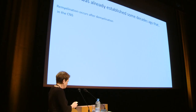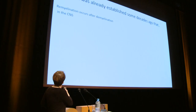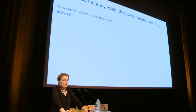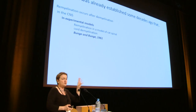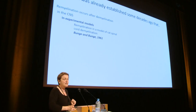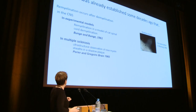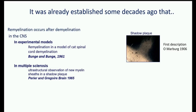Decades ago, it was established that remyelination occurs after demyelination in the CNS, first shown in experimental models — attributed to Robert and Marie Bunge in 1961 in a spinal cord demyelination model in cats. Then in 1965, neuropathologists Périer and Grégoire demonstrated remyelination in MS. At that time, there was debate whether shadow plaques represented ongoing demyelination or remyelination — originally described by Otto Marburg in 1906.